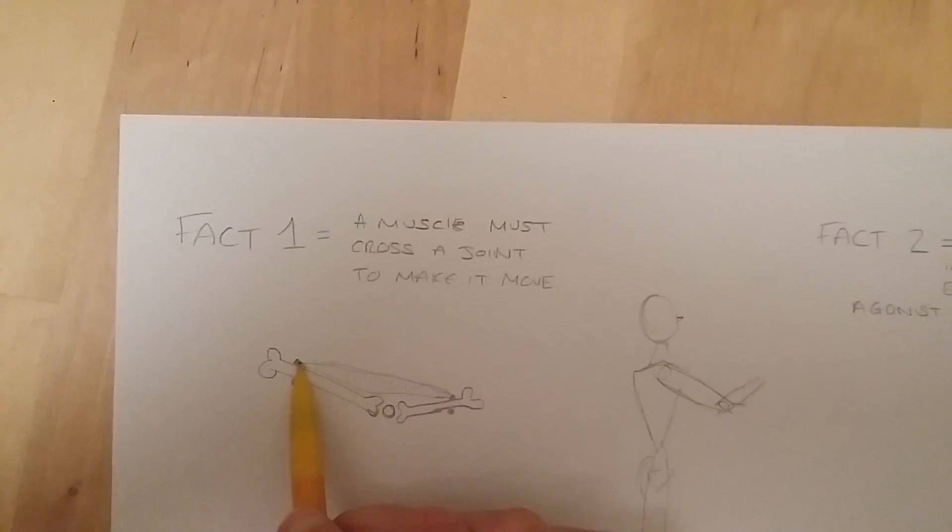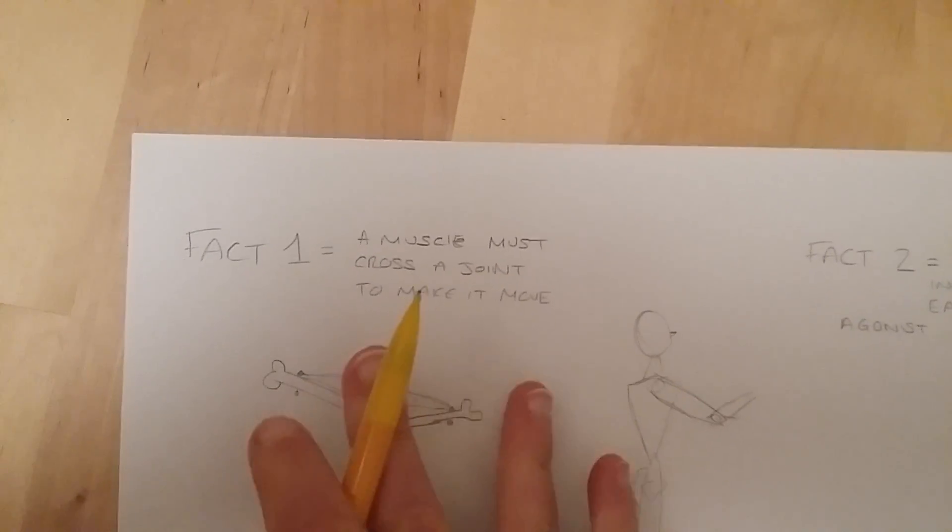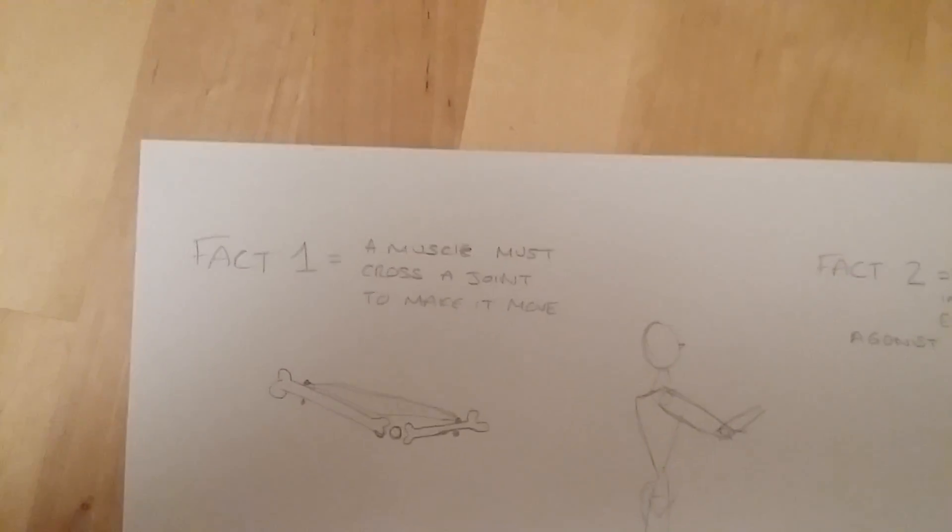So you can imagine if it started here and ended here, even if it contracted it wouldn't have anywhere to go. So it must cross that joint in order to make that movement happen. So that's the first thing you need to know.